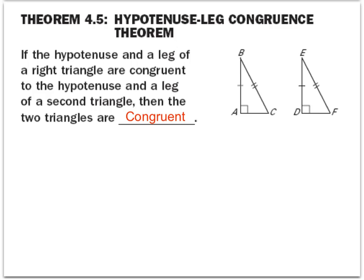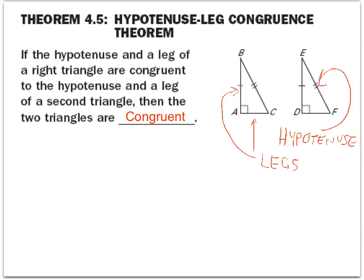Think back to what you've already learned about right triangles. In a right triangle, we have two different things. We have the hypotenuse, which is the longest side of the right triangle — so in this case, EF and BC are both hypotenuses. And then we have the legs of a right triangle, which are just the two sides that are between that right angle, or the two shortest sides. The hypotenuse-leg congruence theorem says that as long as we have a congruent hypotenuse — so BC is congruent to EF — and we also have that one leg is congruent, so leg AB is congruent to DE, then we can say that these two triangles are congruent.